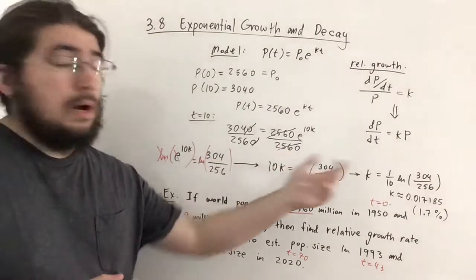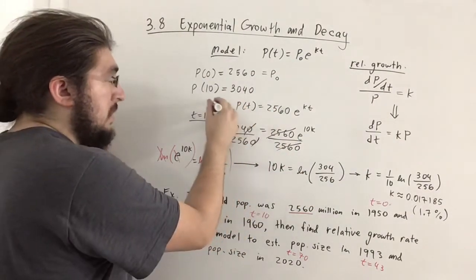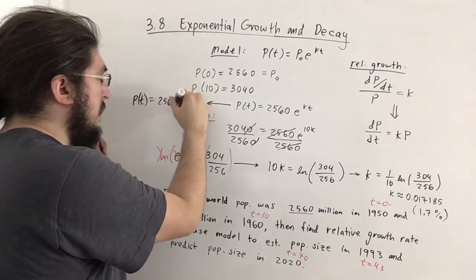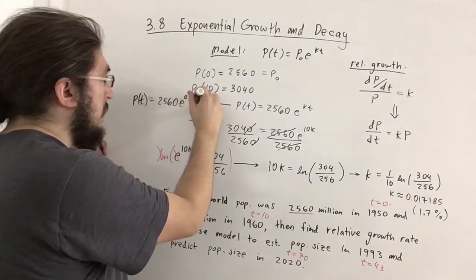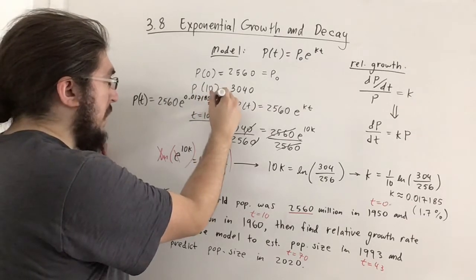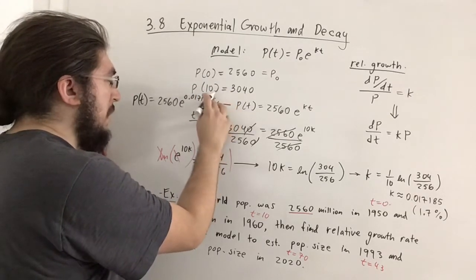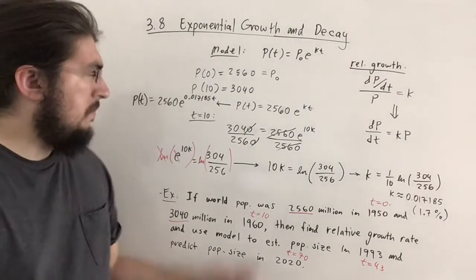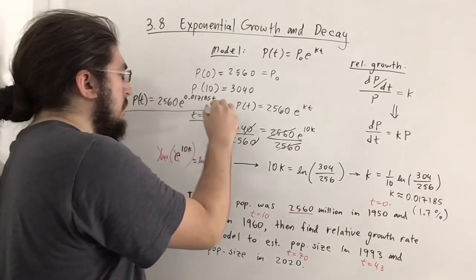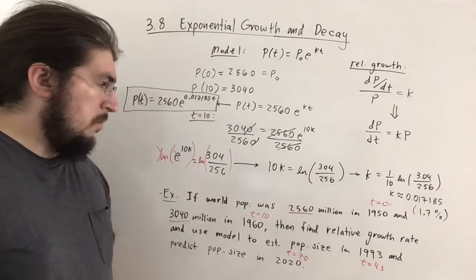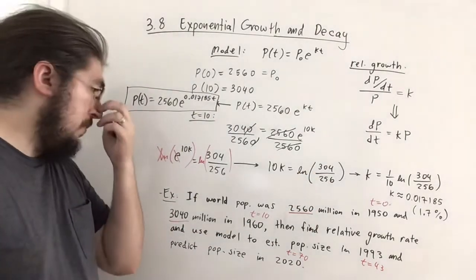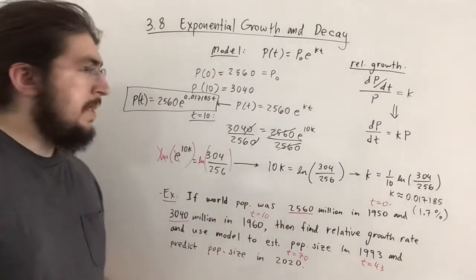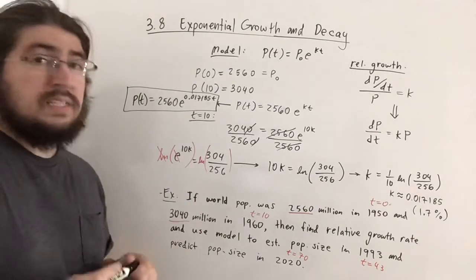This completes the model because now we know k. So P(t) = 2560·e^(0.017185·t). We're approximating k here, so we want to keep reasonable accuracy. This is our model and we've answered the first part with a relative growth rate of about 1.7%. Now we need to use the model to predict population sizes at t = 43 and t = 70.